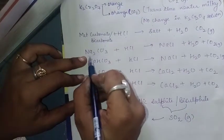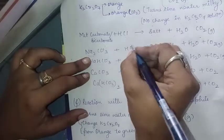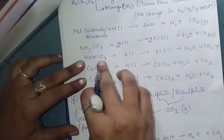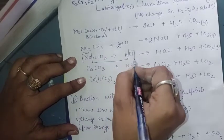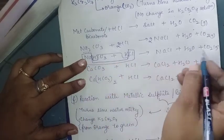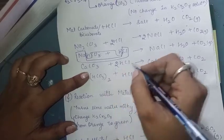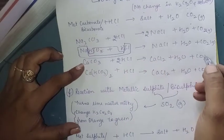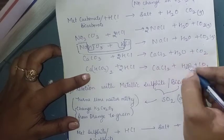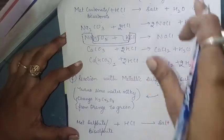Balancing the carbonate and bicarbonate equations: Na₂CO₃ + 2HCl → 2NaCl + H₂O + CO₂ (balanced by putting 2 in front of HCl and NaCl). NaHCO₃ + HCl → NaCl + H₂O + CO₂ (already balanced). CaCO₃ + 2HCl → CaCl₂ + H₂O + CO₂. Ca(HCO₃)₂ + 2HCl → CaCl₂ + 2H₂O + 2CO₂.